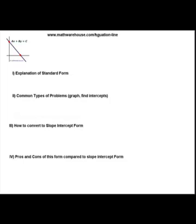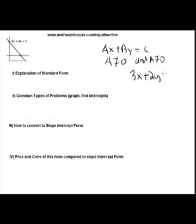The standard form equation of a line is given as ax + by = c, where a is not zero and b is not zero. It looks something like 3x + 2y = 11. We have an a and a b that are not zero, and we have some constant on the side.